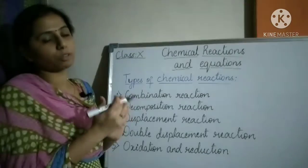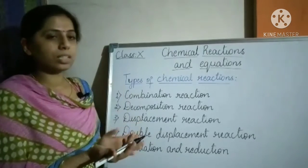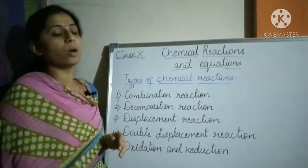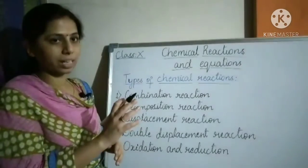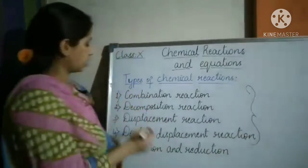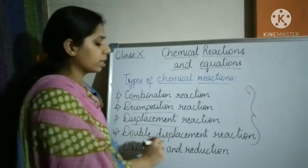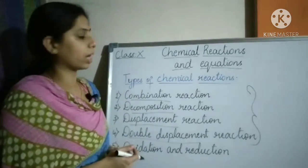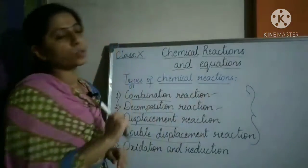You will learn about bonds in the third or fourth lesson — how atoms bond with each other. This session covers how many reactions are classified based on the nature of reactants and products. Chemical reactions are divided into four types: combination reaction, decomposition reaction, displacement reaction, double displacement reaction, and also oxidation and reduction reactions.